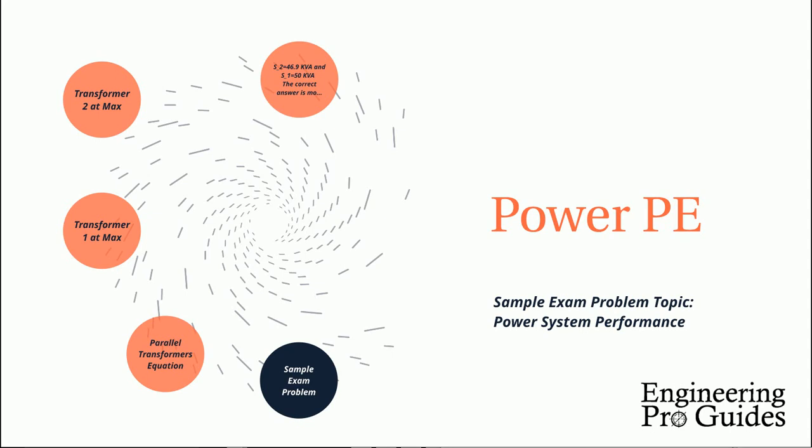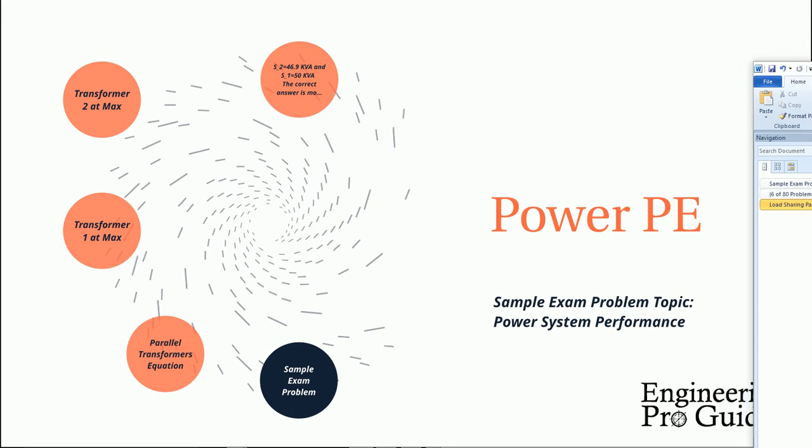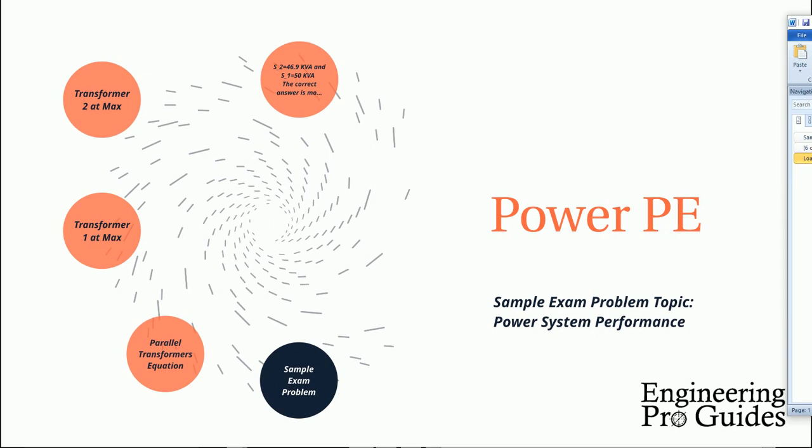In this video, we will cover a sample exam problem for the Power PE exam. This exam problem falls under the topic of power system performance, which accounts for 6 of 80 problems on the PE exam.